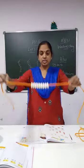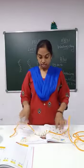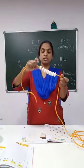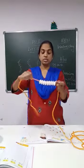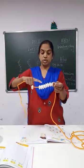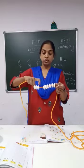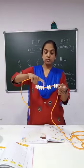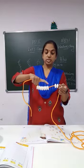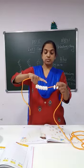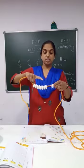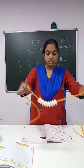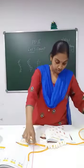Can you all see children? Can you all see and count? Yes. 1, 2, 3, 4, 5, 6, 7, 8, 9. So we have here 9 bits.